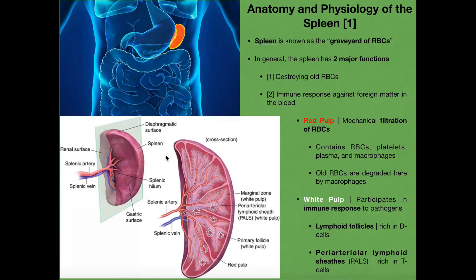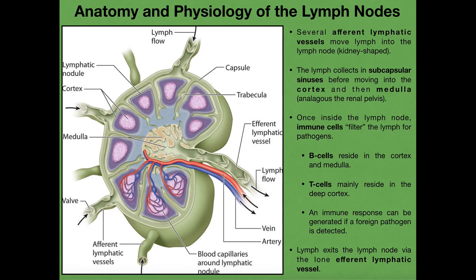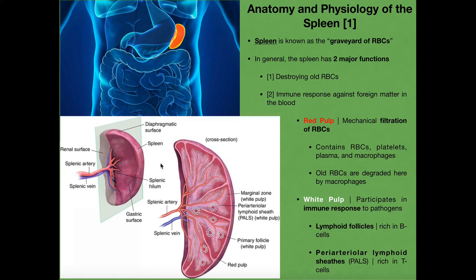The spleen has a blood supply. Blood moves into the spleen through the splenic artery, which divides many times to supply the various regions of the spleen, and then it's drained by the splenic vein. It's important to understand that even though the spleen shares some functions with the lymph nodes, the spleen does not actually filter lymph. It's blood that's coming to the spleen. So the spleen, even though it's classified as a secondary lymphatic organ, monitors blood — not lymph. Lymph nodes monitor lymph.